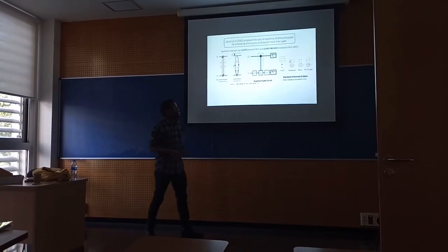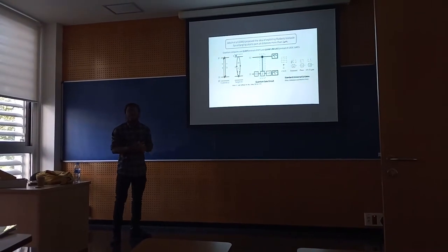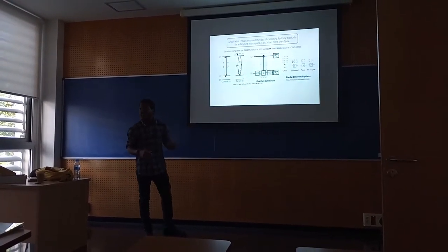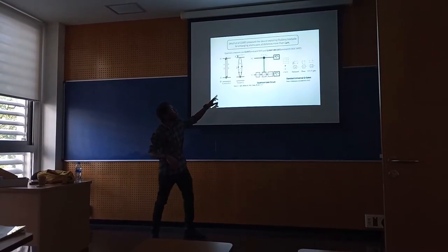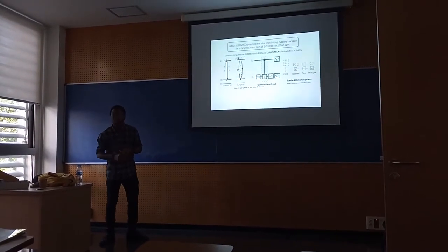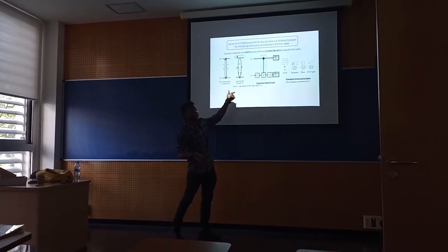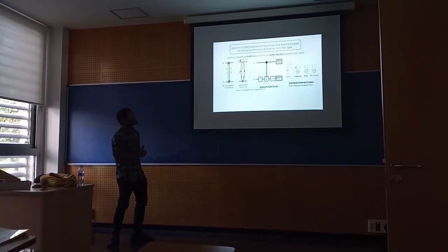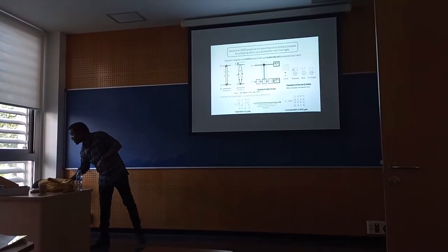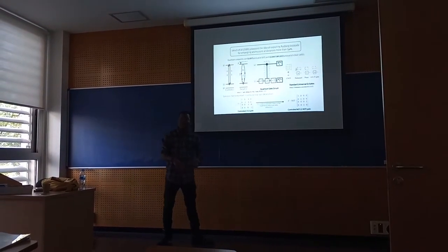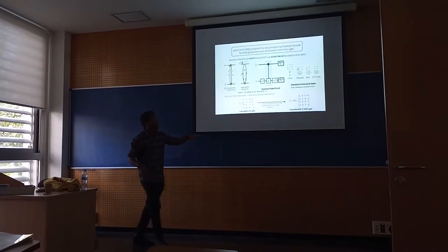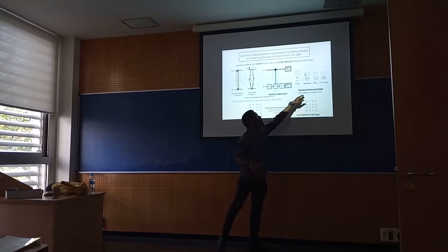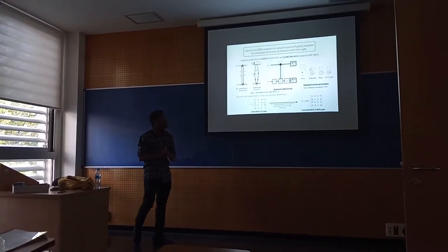This implementation was demonstrated by Saffman, where one particular atom is excited to its Rydberg state as the control atom. This control atom pushes the other target atoms off-resonance with the excitation field. If the control and target atoms are properly coupled, the evolution of the target atoms can be controlled by the quantum state of the control atom. As a result, the evolution matrix is expressed in the computational basis as the controlled-Z gate, which can be further converted to the controlled-NOT gate, setting the basis for standard universal quantum gate operations, including the Toffoli gate and the phase gate.